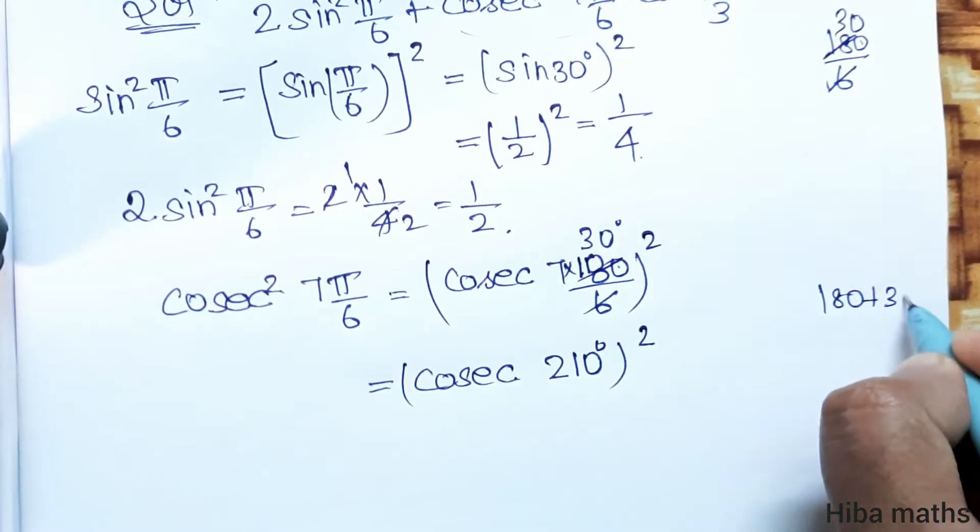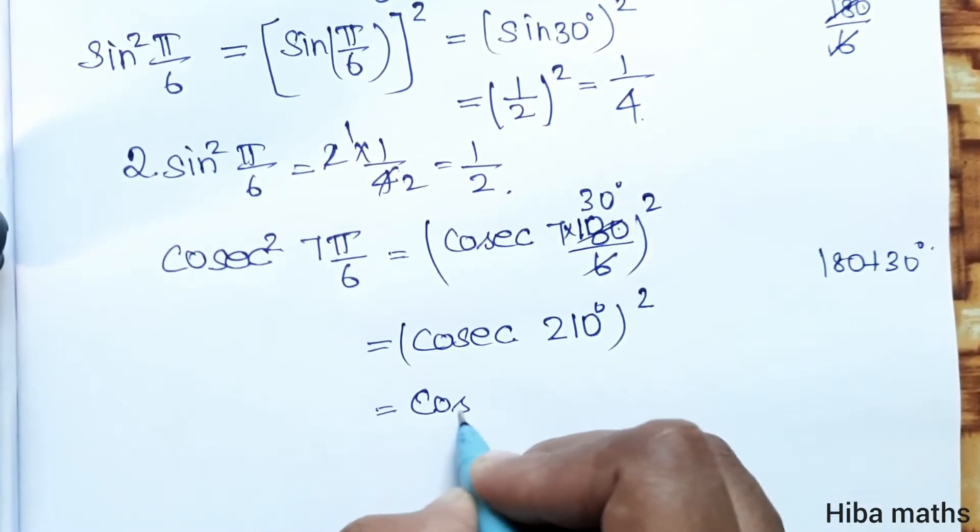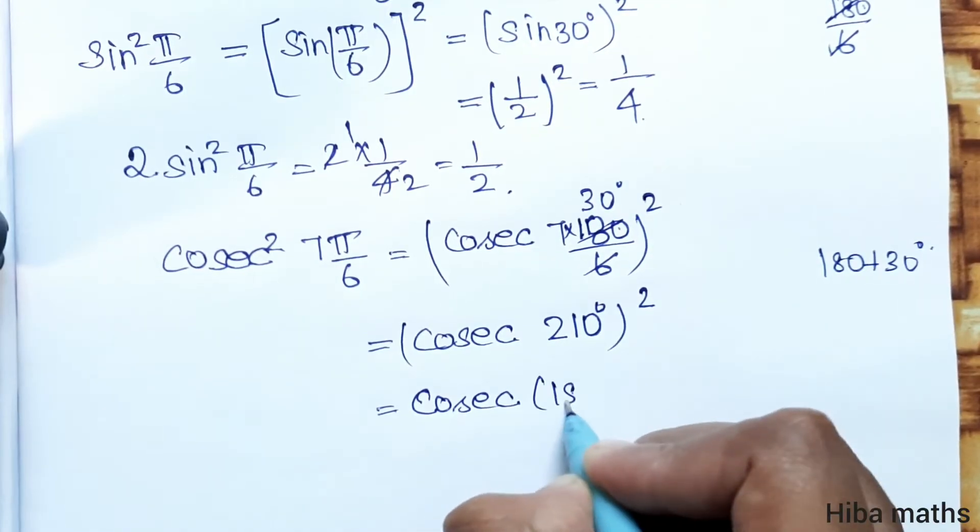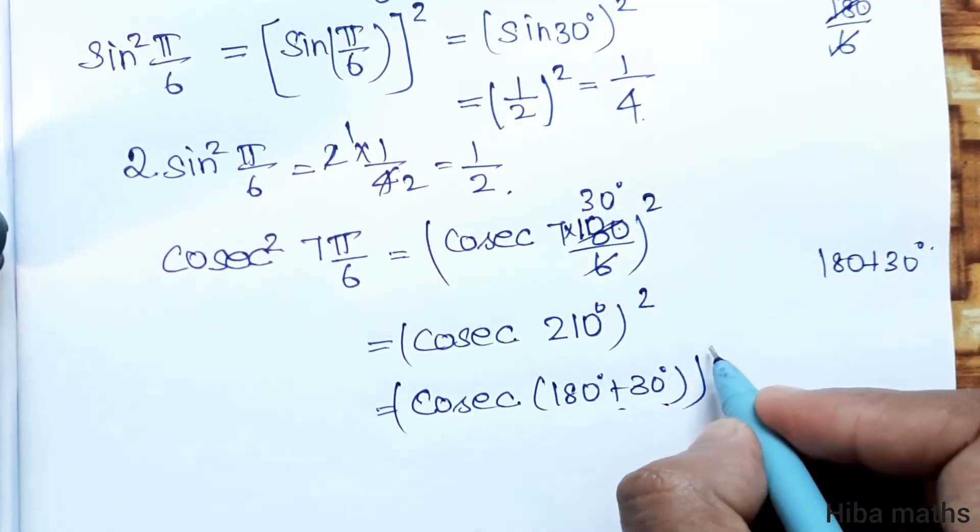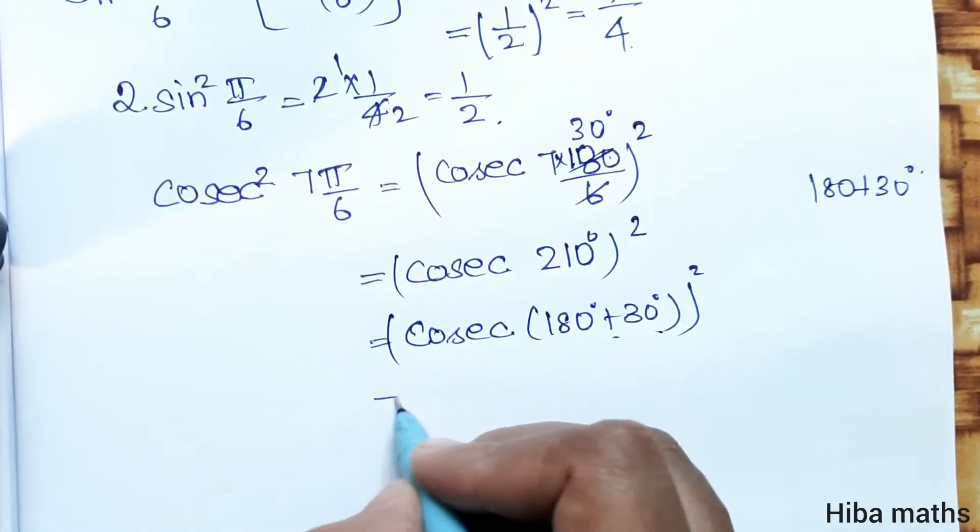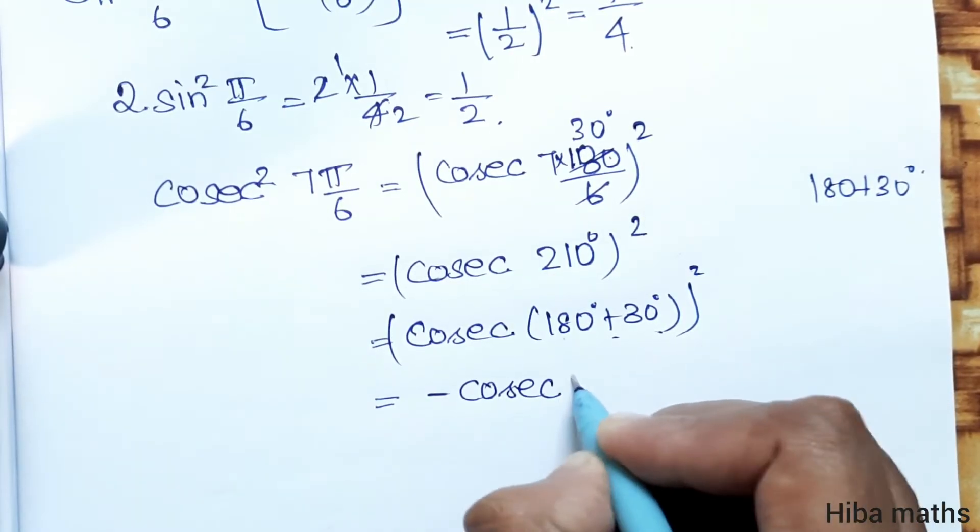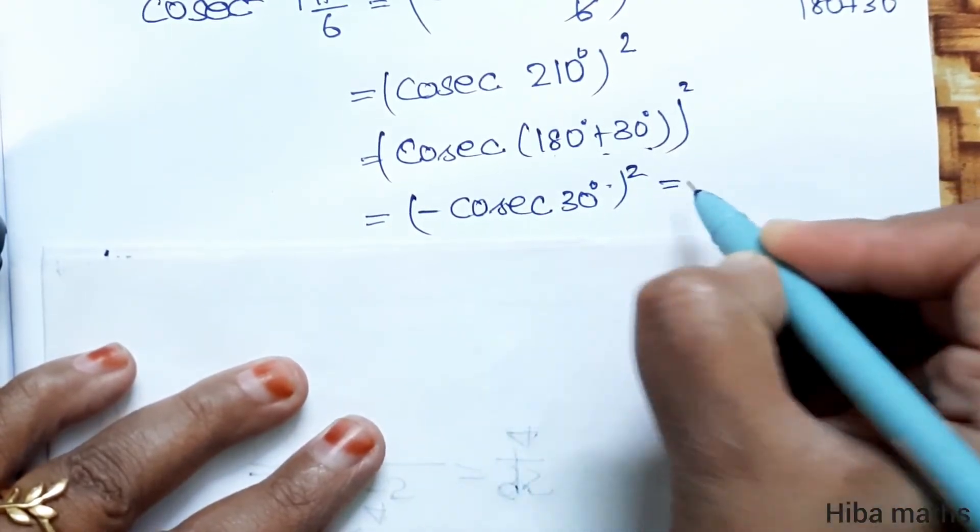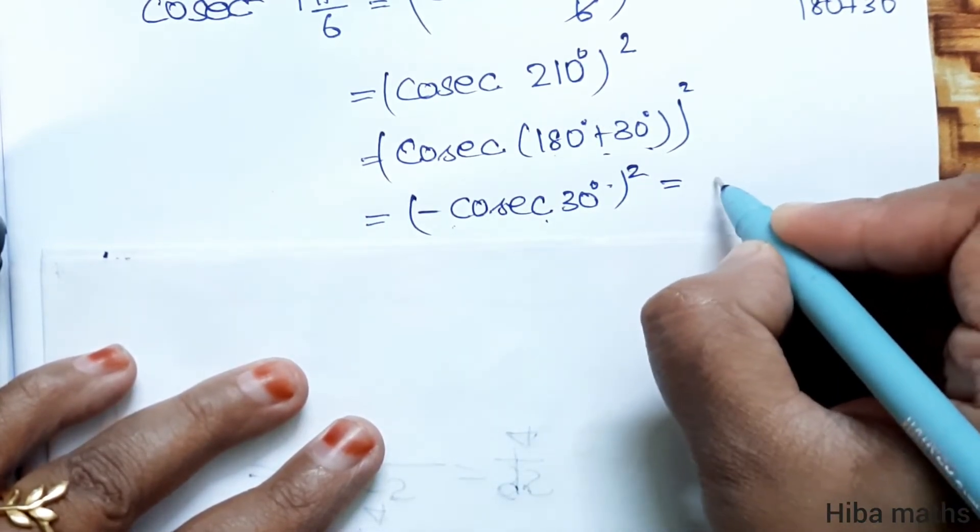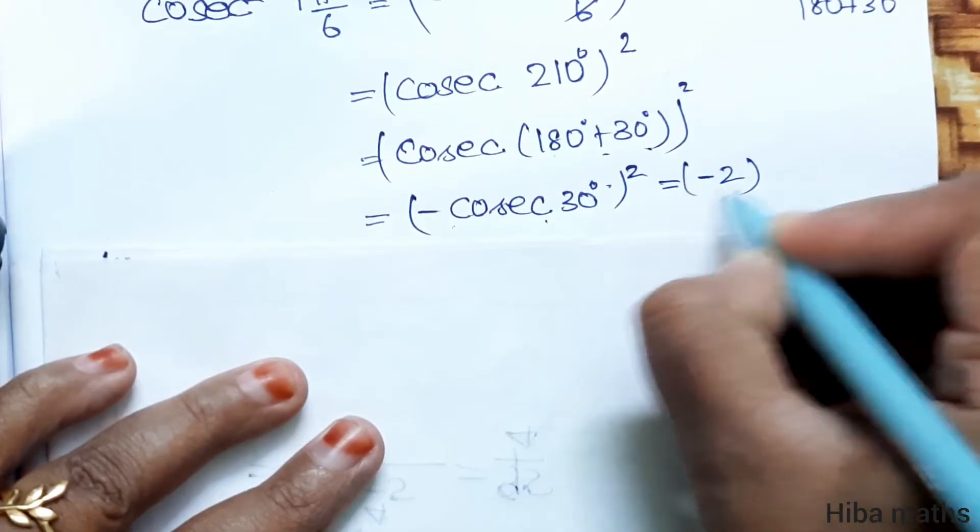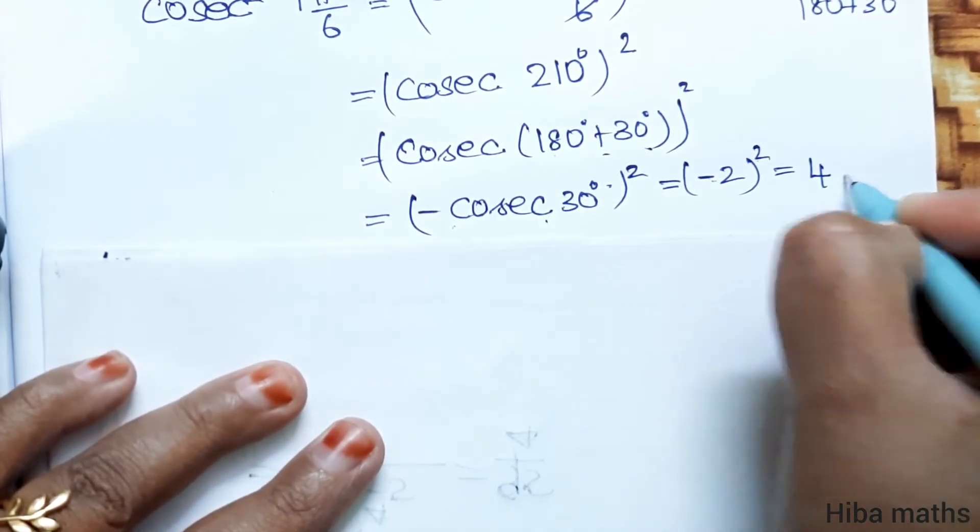Now we have 210° = 180° + 30°. So cosec(180° + 30°) = -cosec 30°. Then (-cosec 30°)² where cosec value is -2, so (-2)² equals 4.